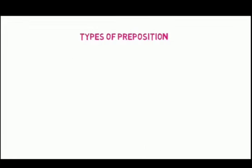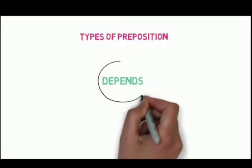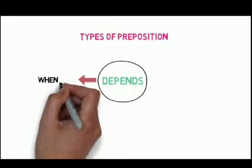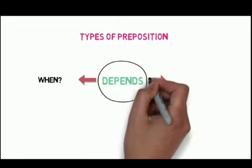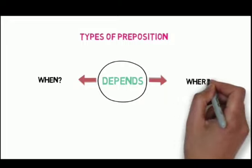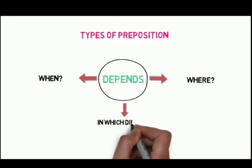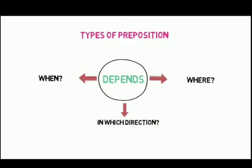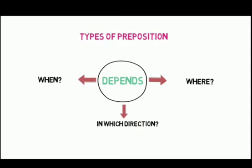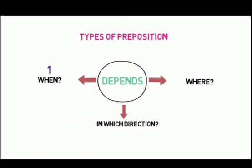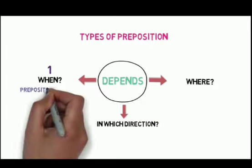Now let's see the types of preposition. The types depend on situation. The first type is based on 'when,' the second is based on 'where,' and the third is based on 'in which direction.' So prepositions always depend on the situation or condition in the sentence.